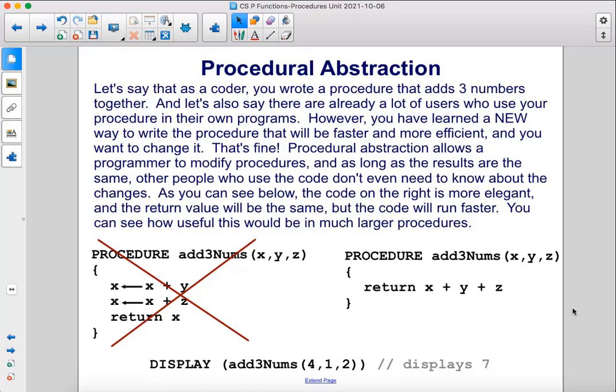Procedural abstraction allows a programmer to modify procedures, and as long as the results are the same, other people who use the code don't even need to know about the changes.